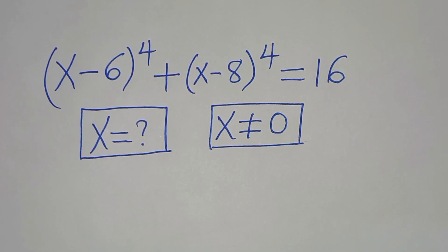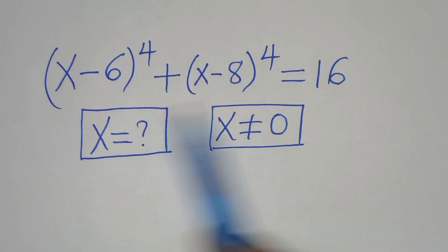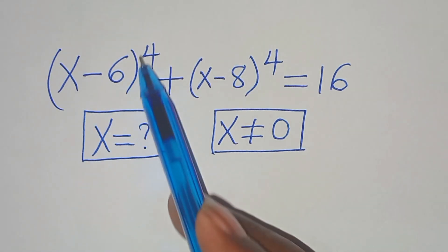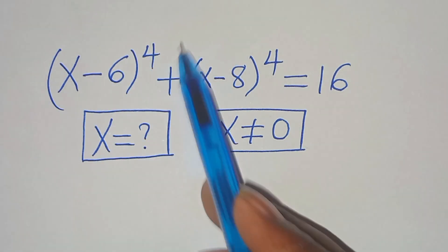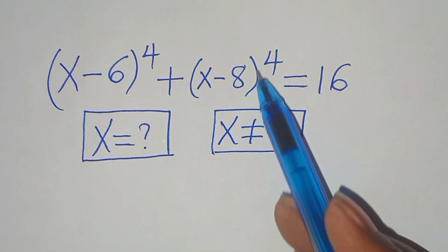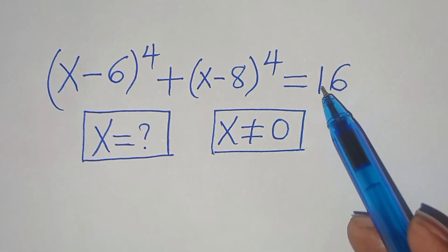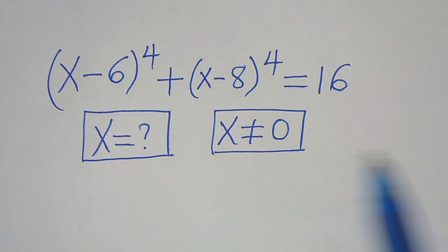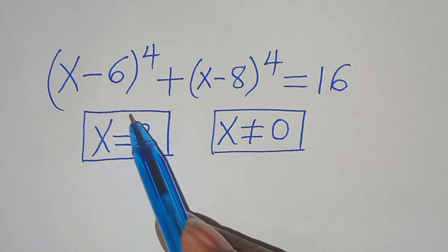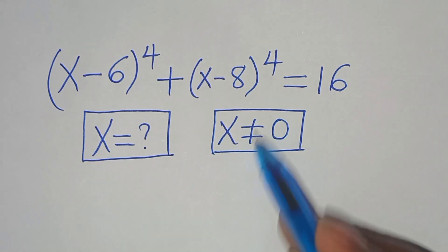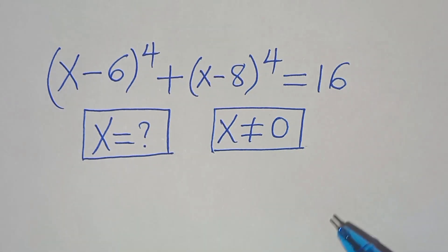Hello everyone, you are welcome to solve this nice algebra problem, which is x minus 6 to the power of 4, plus x minus 8 to the power of 4, equal to 16. What are the values of x, given that x is not equal to 0?